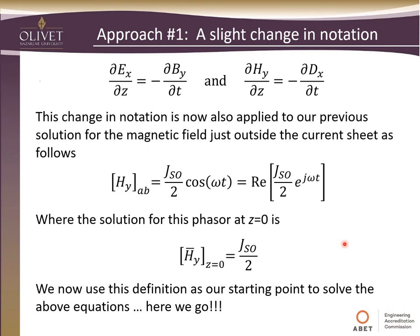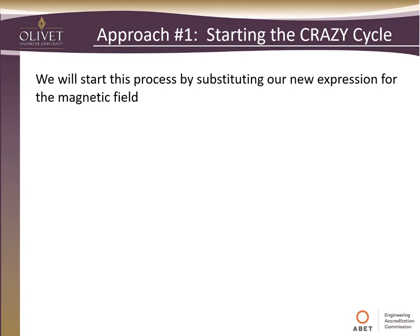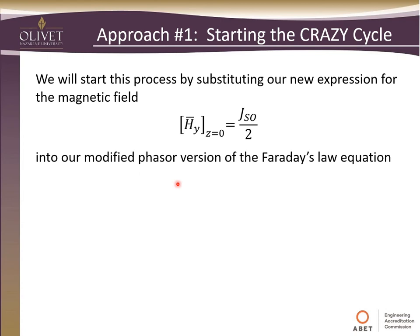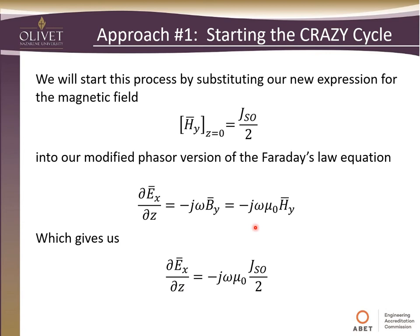We now use this definition as our starting point to solve the equations above. We start by substituting our new expression for the magnetic field at z = 0 into our modified phasor version of Faraday's law. This was the derivative with respect to time, but we're in the Fourier domain, so we use the new expression. Relating via permeability, this gives us an equation where H_y at z = 0 is replaced by this amplitude term. This is our starting point.